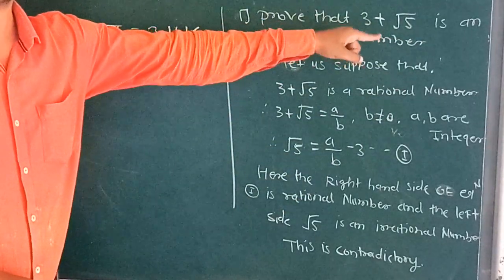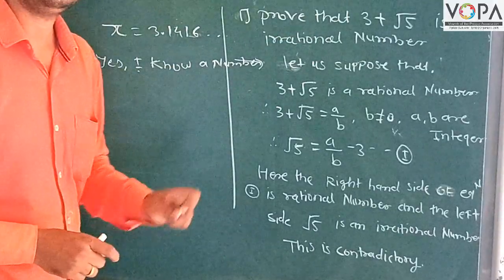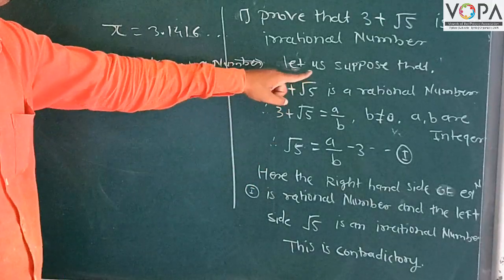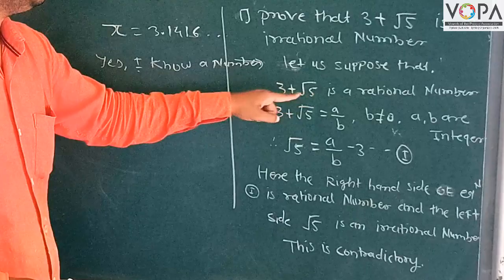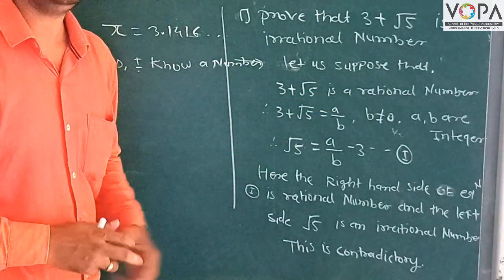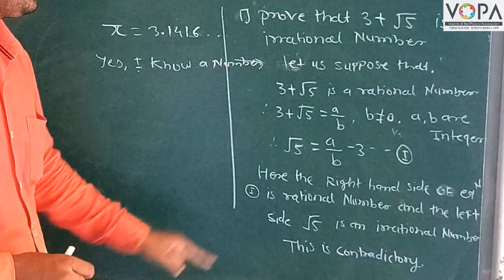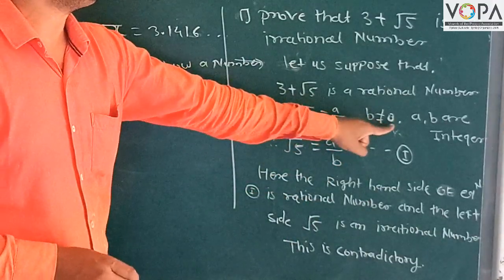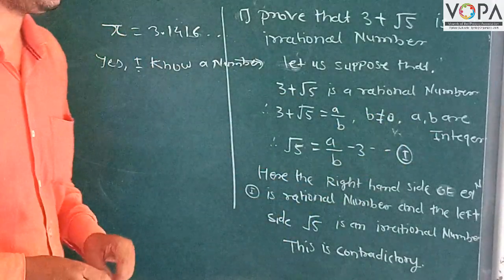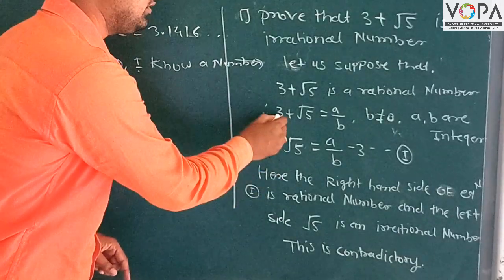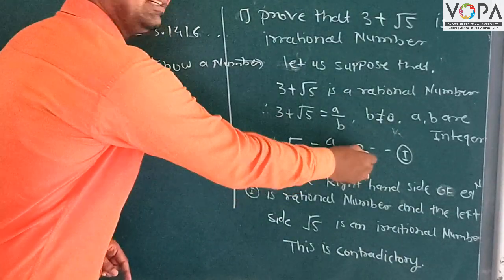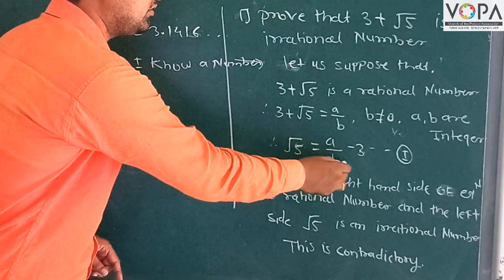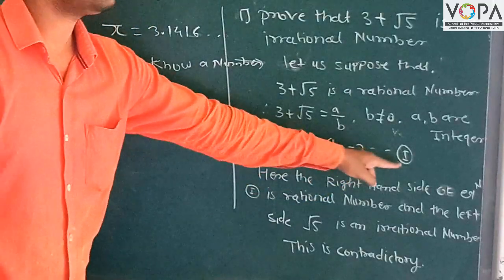Let us suppose 3 plus root 5 is a rational number. Then 3 plus root 5 equals a upon b, where b is not equal to zero, and a and b are integers. So root 5 equals a upon b minus 3. This is equation one.